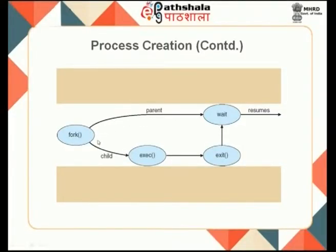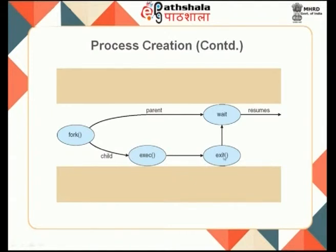Looking at this diagram, there is a process that is running and it does a fork, which creates a child process. Now there are two processes — the parent as well as the child. The parent can wait till the child exits, and the child process can either continue to execute the same thing as the parent, or it can use an exec system call to execute something else. Once the child finishes its work, it will exit, and then the parent can continue.